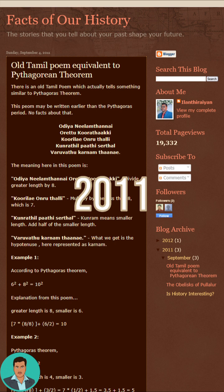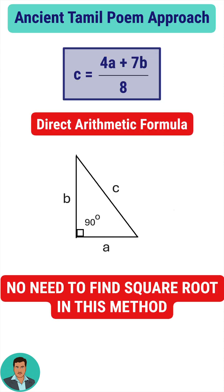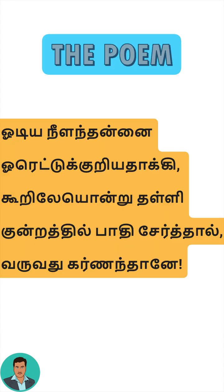I first broke down this fascinating concept on my blog. While Baudayana and Pythagoras proved their theorem using the areas of squares, this Tamil verse gives a completely different approach — a direct arithmetic formula to find the hypotenuse. Listen to this.